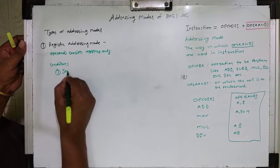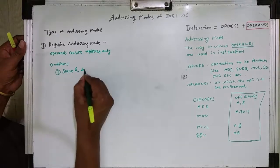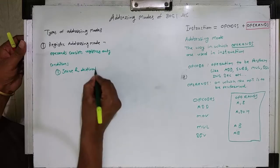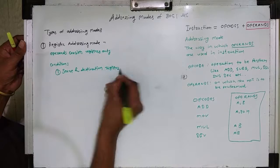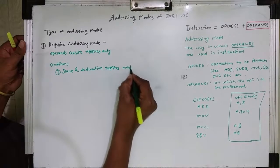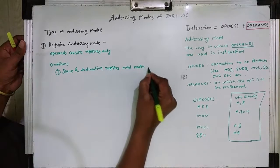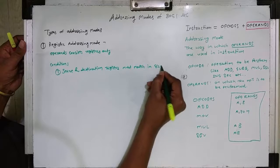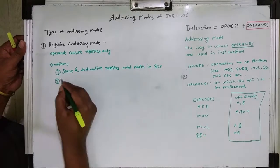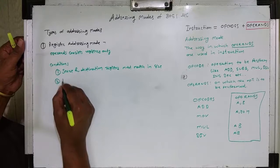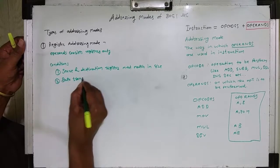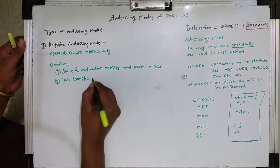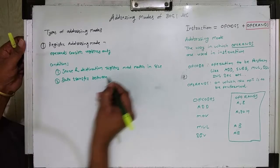Now in register addressing mode there are two conditions. The first condition is that the source and destination registers must match in size — meaning if the source register is 8-bit (like R0, R1, or R7), then the destination register must also be 8-bit. The second condition is that data transfer between register bank registers R0 to R7 is not possible.